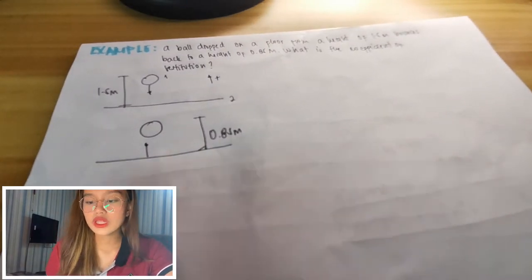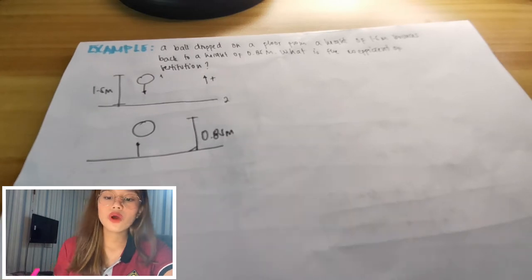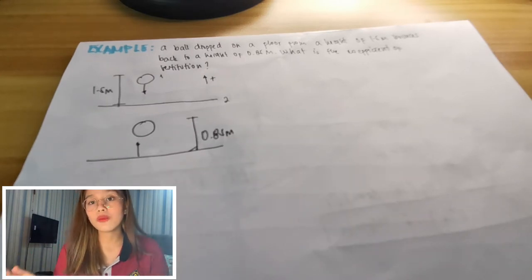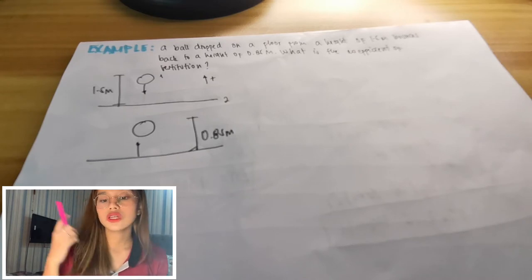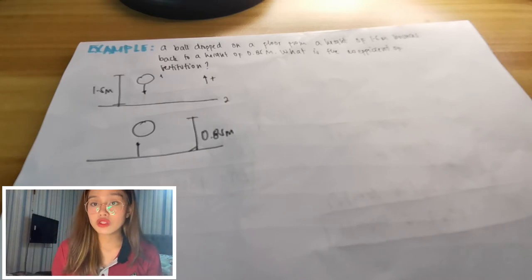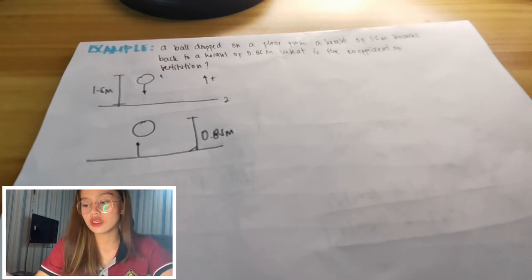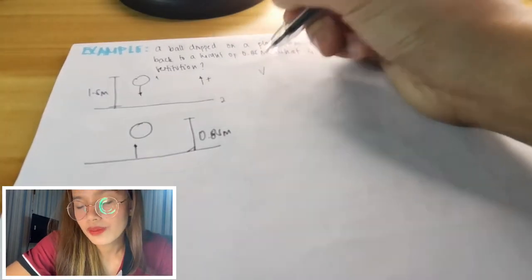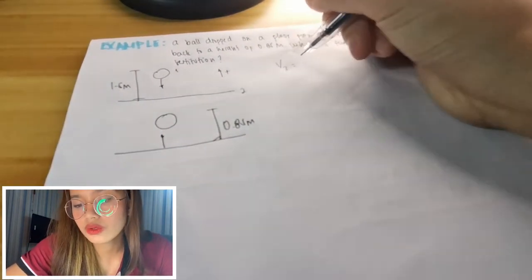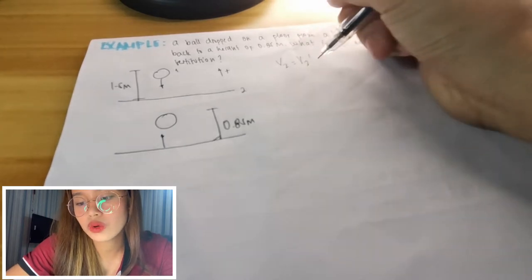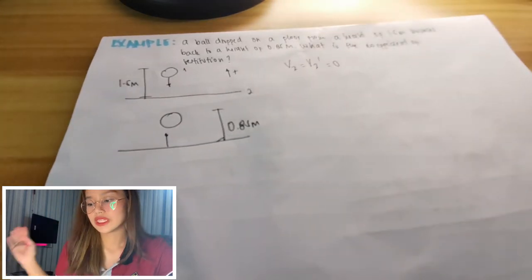So now, since nothing moved, the floor stayed in place when the ball dropped and also when it bounced back, it had no velocity. So we can say that v₂ is equal to v₂ prime. So they're both zero.